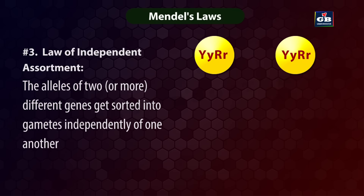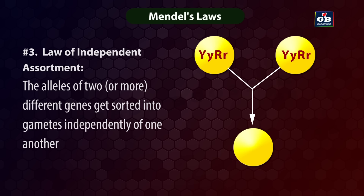The law of independent assortment states that alleles of different genes are sorted into gametes independently of one another. For example, for seed color the parent has dominant yellow and recessive green alleles; for seed shape it has dominant round and recessive wrinkled alleles. If the dominant yellow allele is passed to the gamete for color, either dominant round or recessive wrinkled can independently be passed for shape. One allele of a particular character does not influence the inheritance of alleles of another character.